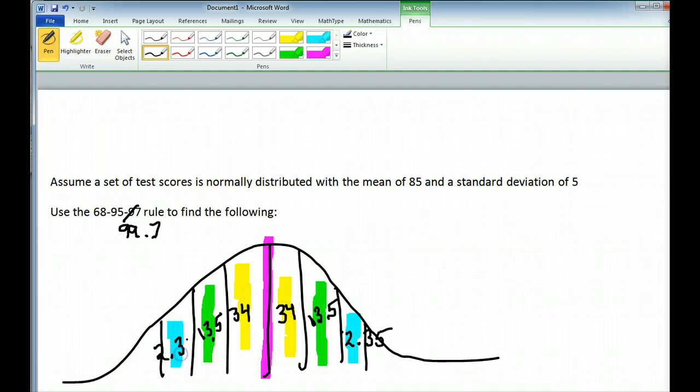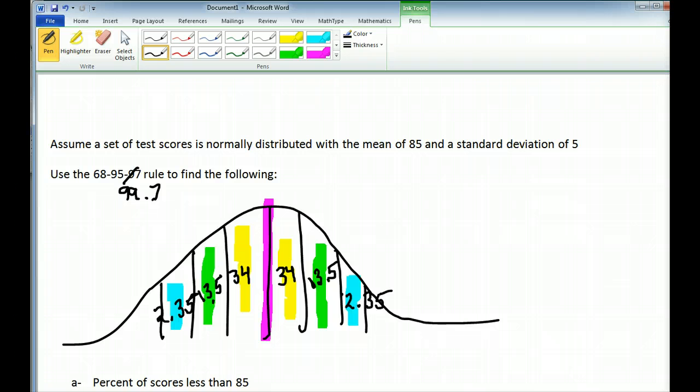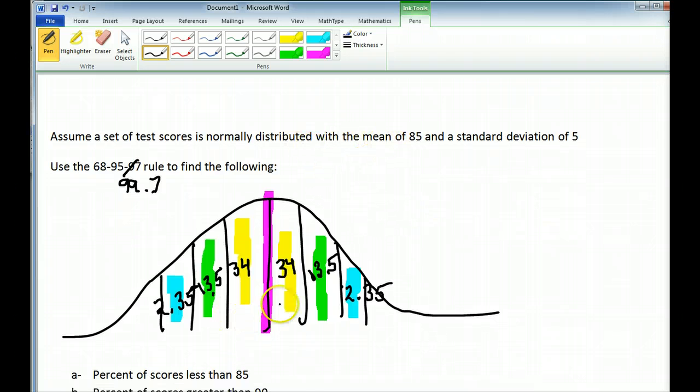Now this curve actually will look the same for any normally distributed data point. Any data that falls in with a normal distribution, the values for each bar will be the same. Now I'm going to go ahead and look at the specific problem. I have a mean of 85. I'm going to fill that in for the pink bar or the average and a standard deviation of 5.